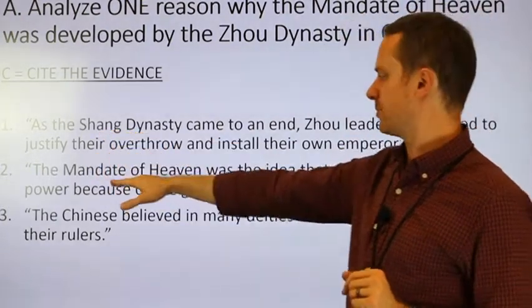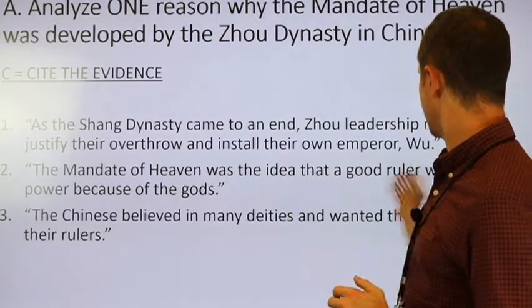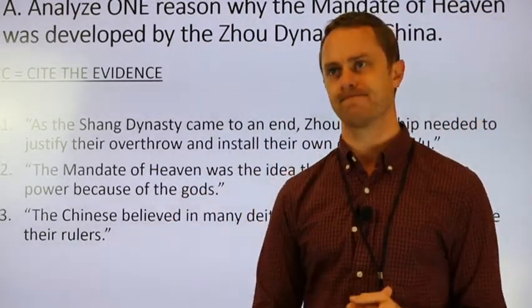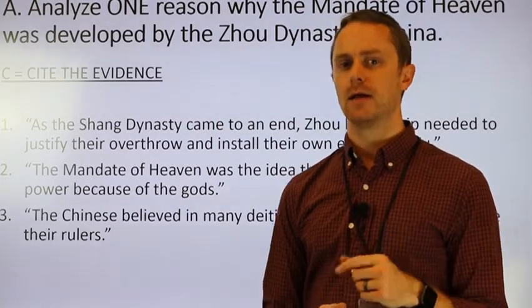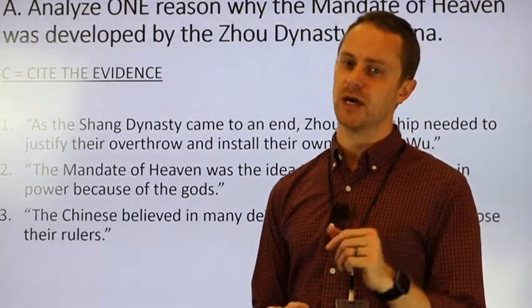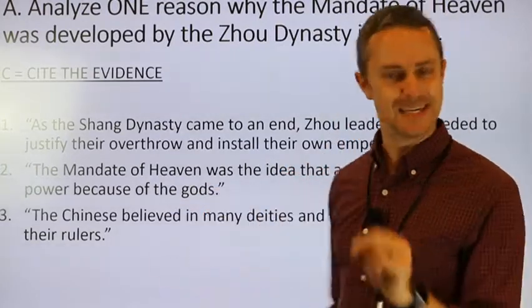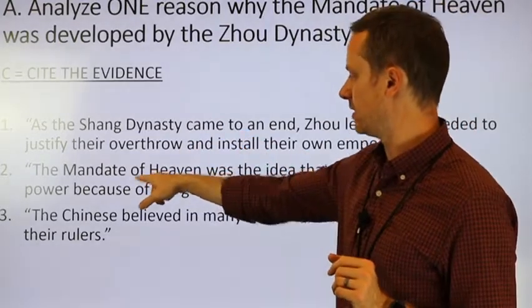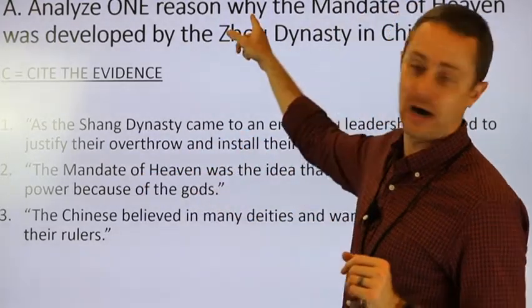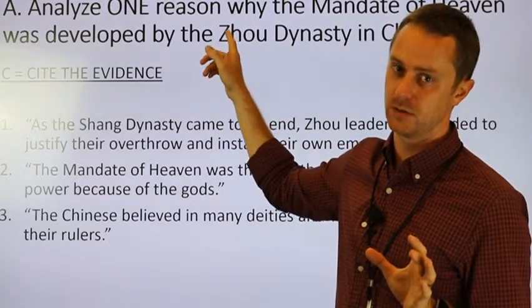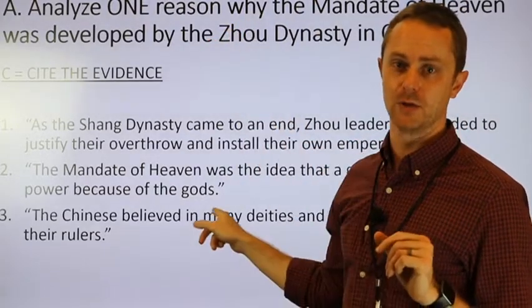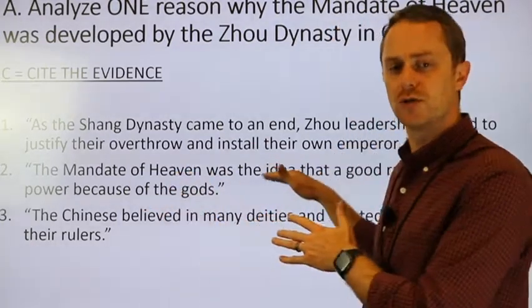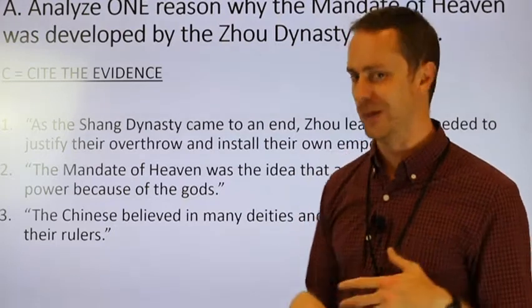Option number two: The Mandate of Heaven was the idea that a good ruler was in power because of the gods. This option does not address the question properly — it answers what the Mandate of Heaven was, not why the Mandate of Heaven was used. We're looking for why; this is a what. It doesn't mean you can't include it to impress the reader, but you're not getting any points for it. Don't waste time or space.